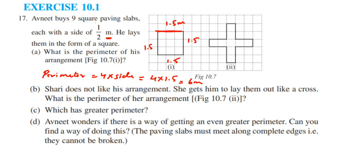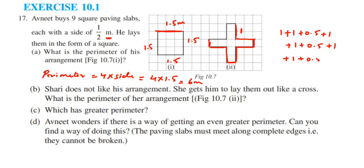So adding up directly: this whole side is 1, plus the next whole side is 1, then plus 0.5 because one slab is 0.5 meter, then plus 1, then plus 1, then plus 0.5, then plus 1 again because two slabs are there, then plus 0.5, then plus 1, then plus 1, and the last one is 0.5.